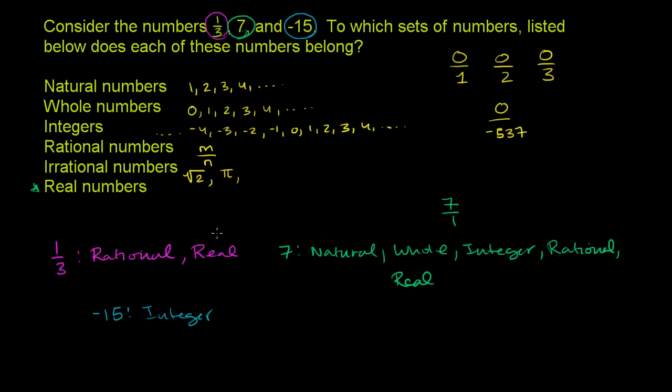It is rational. It can be represented as negative 15 over 1. So it is rational. And because it is rational, it cannot be irrational. And of course, it is also real. And we are done.